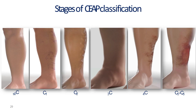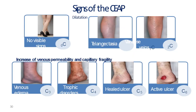Telangiectasia was discussed earlier. This is the C3 edema, and then eczema is the C4. C5 and C6 are when you have the ulcer or healed ulcer. This is another picture showing the same staging.